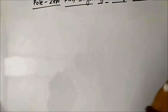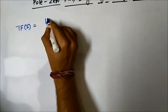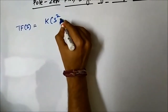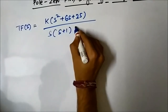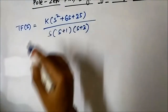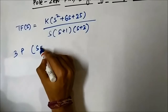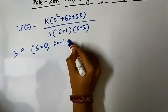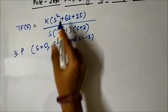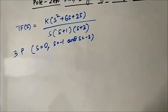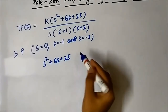Now let us discuss another transfer function related to complex roots. Suppose we have a transfer function: (s²+6s+25) / [s(s+1)(s+3)]. Here we have 3 simple poles at s equals 0, s equals minus 1, and s equals minus 3. In the numerator there is no simple zero — only the expression s²+6s+25, which may lead to complex zeros.